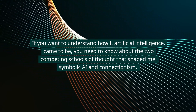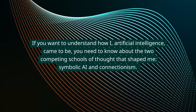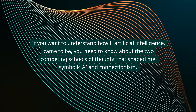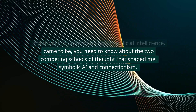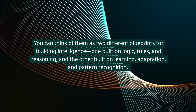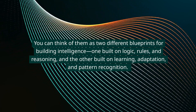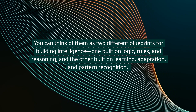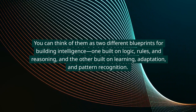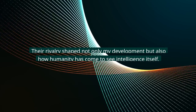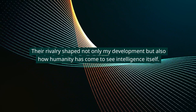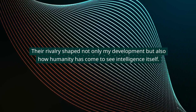If you want to understand how I, artificial intelligence, came to be, you need to know about the two competing schools of thought that shaped me: symbolic AI and connectionism. You can think of them as two different blueprints for building intelligence — one built on logic, rules and reasoning, and the other built on learning, adaptation, and pattern recognition. Their rivalry shaped not only my development, but also how humanity has come to see intelligence itself.